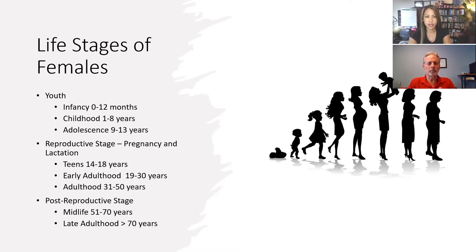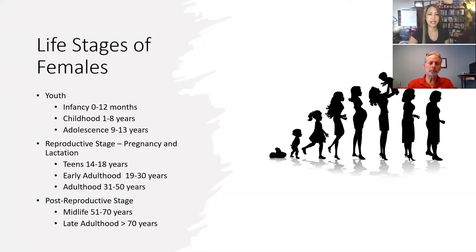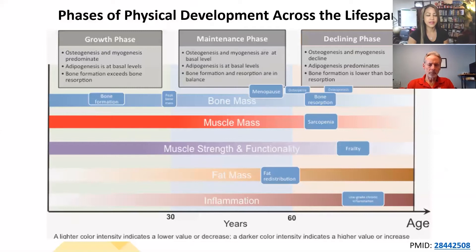And then finally, the last third of our lives is what's called the post-reproductive stage — midlife as well as late adulthood. From a female perspective, we can look at it from that stage in terms of raising babies, and then the second way would be to look at it from the aspect of physical development.